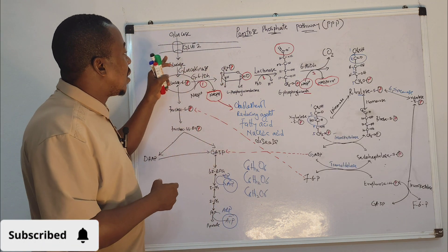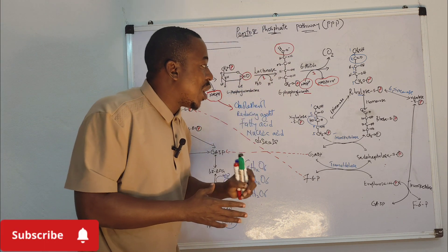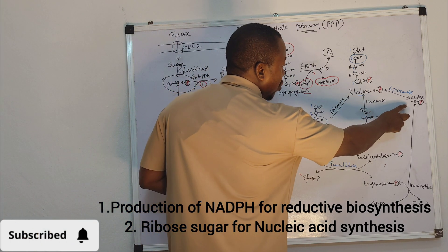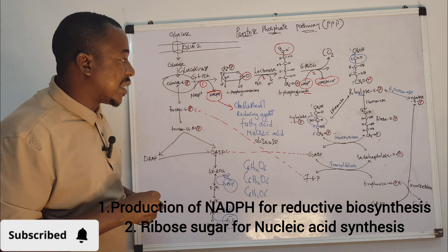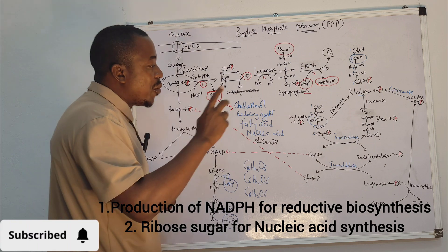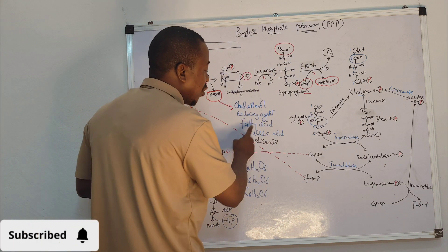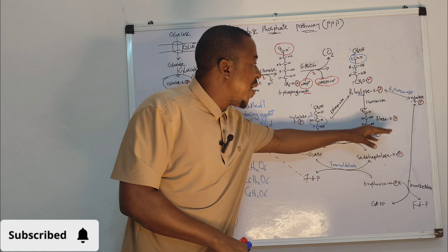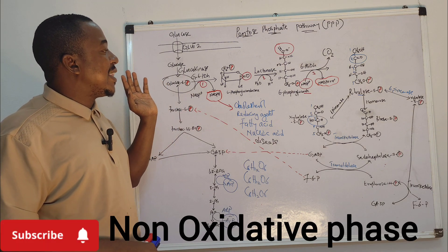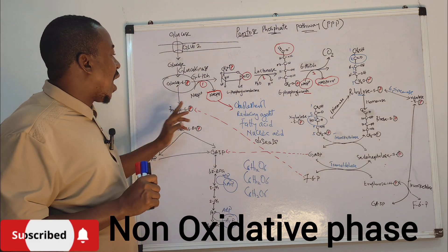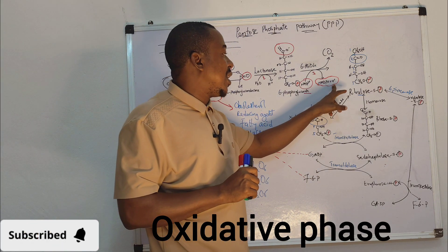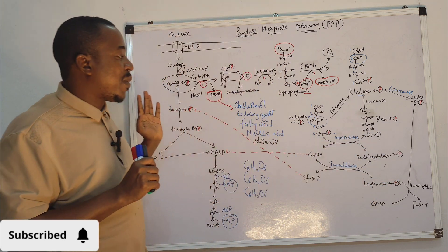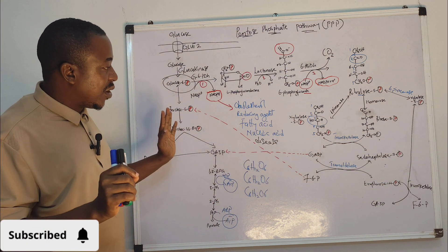There are two basic importances of the pentose phosphate pathway: one, the production of NADPH for reductive biosynthesis; two, the production of ribose sugar for nucleic acid biosynthesis. The pentose phosphate pathway also produces NADPH used in fighting disease. The second phase of the pentose phosphate pathway is called the non-oxidative phase. This is where the ribose-5-phosphate is produced.